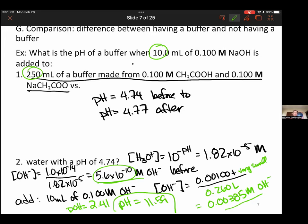So if we did not have a buffer in water and we added 10 milliliters of 0.100 molar sodium hydroxide, the pH would go to 11.59. With the buffer, it only goes to 4.77. So that's a demonstration that the pH of a buffer, the change is much smaller than if the buffer was not present.